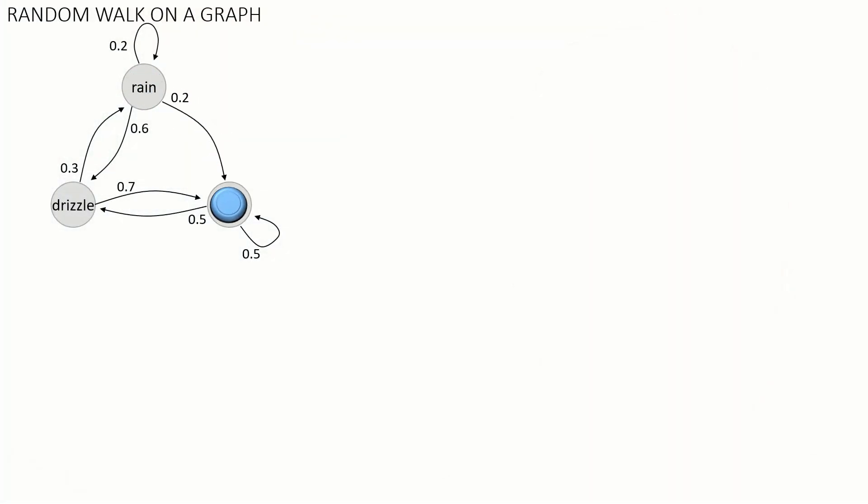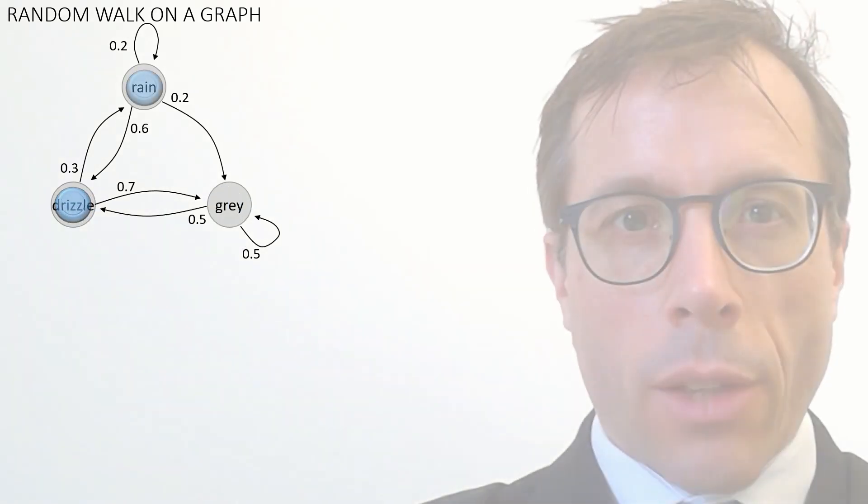Here's the model for Cambridge weather. We've got a directed graph with three vertices, one for each type of day: grey, drizzle, or rain. And we've got a particle that jumps from vertex to vertex following the edges. Each edge is labelled with a probability, and that's the probability of following that edge. For example, if today was drizzle, then tomorrow is either grey with probability 0.7 or rain with probability 0.3. Of course, the total probability out of a vertex has to sum up to 1 for this to make sense.